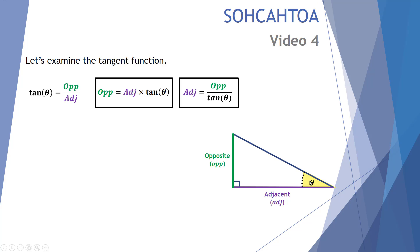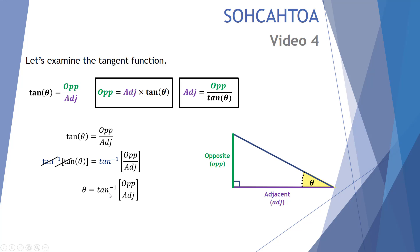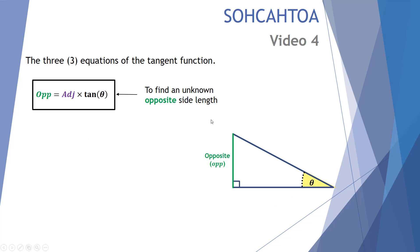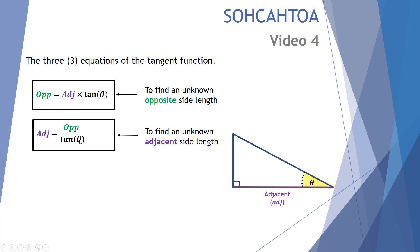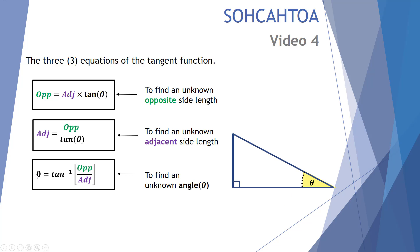Finally, let's get an equation that allows us to calculate the angle theta. To get rid of the tan function, we use the inverse tan. The inverse tan of tan cancels out, leaving us with: theta is equal to the inverse tan of the opposite side length over the adjacent side length. That's our third and final equation to work out an unknown angle. Quick summary: the first equation finds the opposite side length, the second finds the adjacent side length, and the third works out the angle — all using the tangent function.